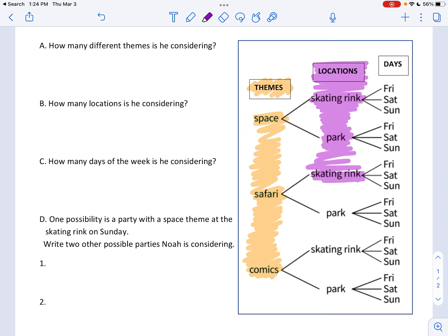Yeah. So it's the same skating rink, but it's connected to something different. This one is connected to safari, whereas the one up on top was connected to space. So there are only two locations. I'm not going to include skating rink twice. There are two locations: the skating rink and the park.